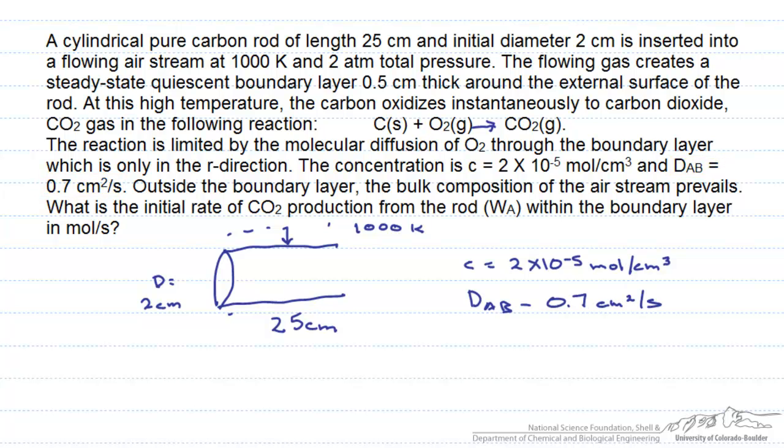Outside the boundary layer, we have the bulk composition of the air stream, which means the mole fraction of oxygen is 0.21. What we want is the initial rate of CO2 production from the rod within this boundary layer.